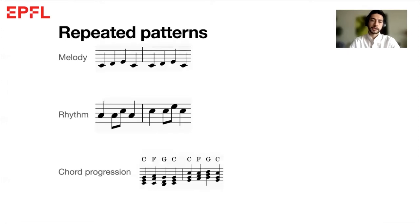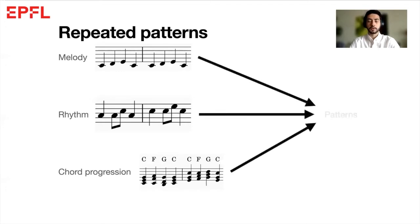Repetition is essential in music. It permeates, emphasizing important aspects of a piece to make it more memorable, for example. It could be a repeated melody, a rhythm, a chord progression, and many more. All of those repetitions are also called patterns.